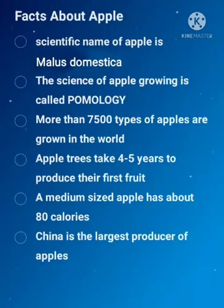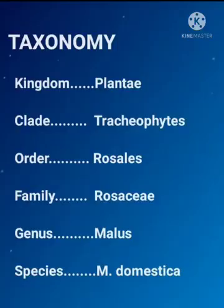Facts about apple. The scientific name of apple is Malus domestica. The science of apple growing is called pomology. More than 75,000 types of apples are grown in the world. Apple trees take 4 to 5 years to produce their first fruit. A medium-sized apple has about 80 calories. China is the largest producer of apples.